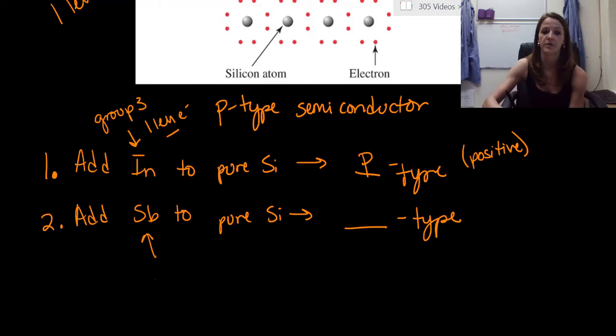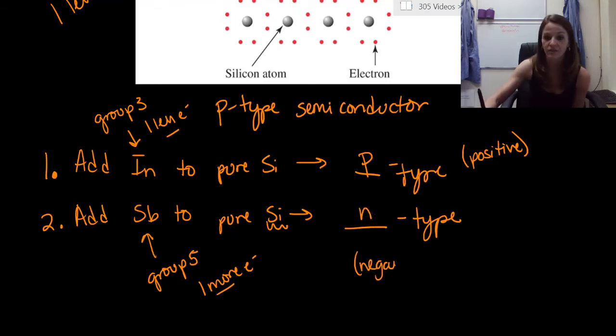So now what we can do is look at antimony. So you find antimony on the periodic table, and the first thing you would see is that it's in group five. So that means you have one more electron than silicon does. If you have one more electron, that means this definitely has to be an N-type or a negative semiconductor. Hopefully that makes sense.